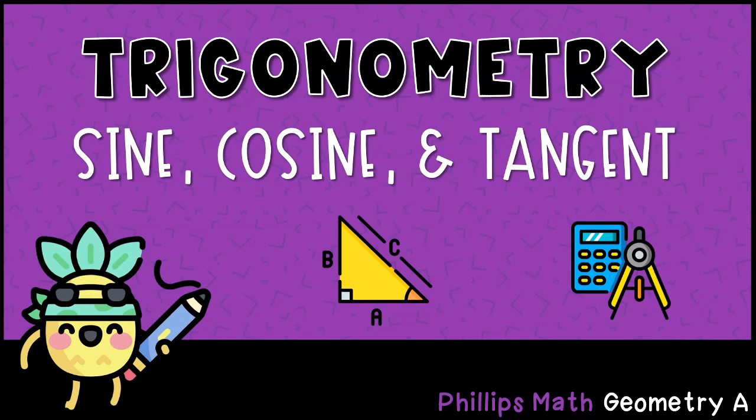In today's lesson, we're going to look at how to calculate the side length of any right triangle using three new functions: sine, cosine, and tangent.